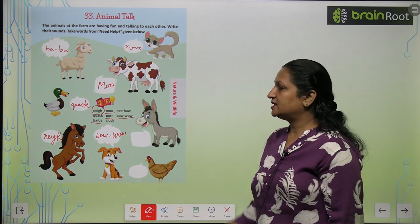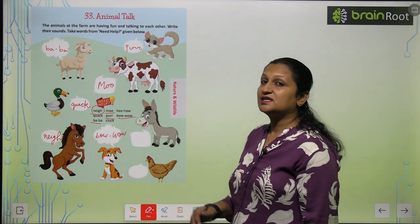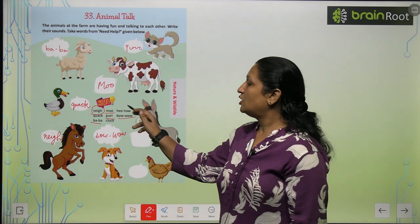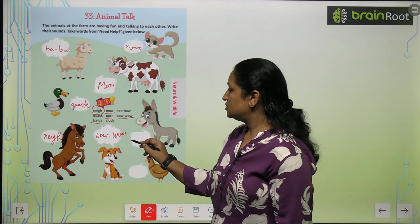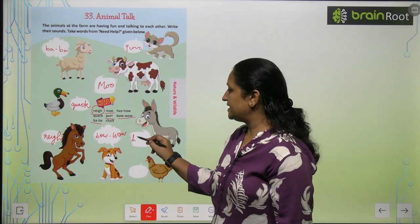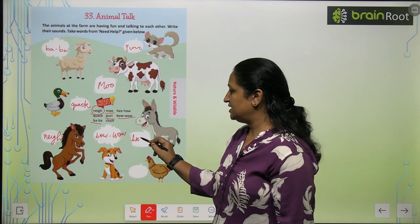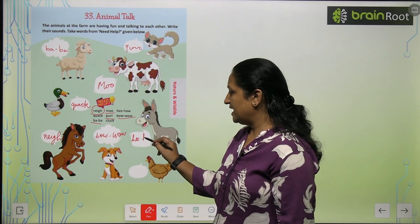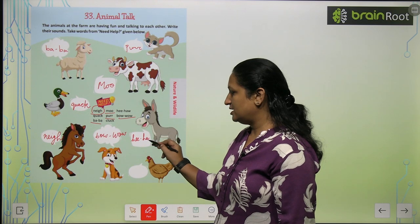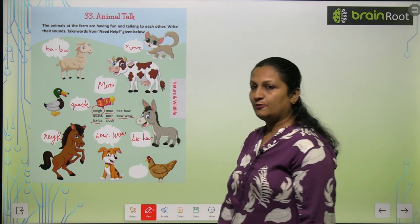This is a donkey. Donkey produces hee-haw. So you will write H-E-E-H-A-W.